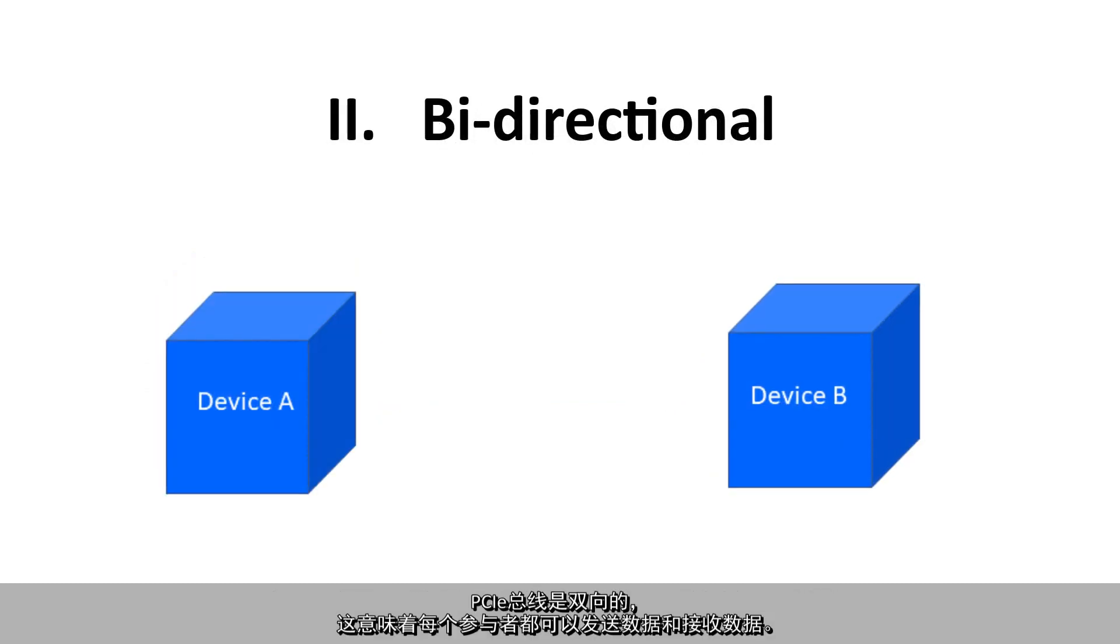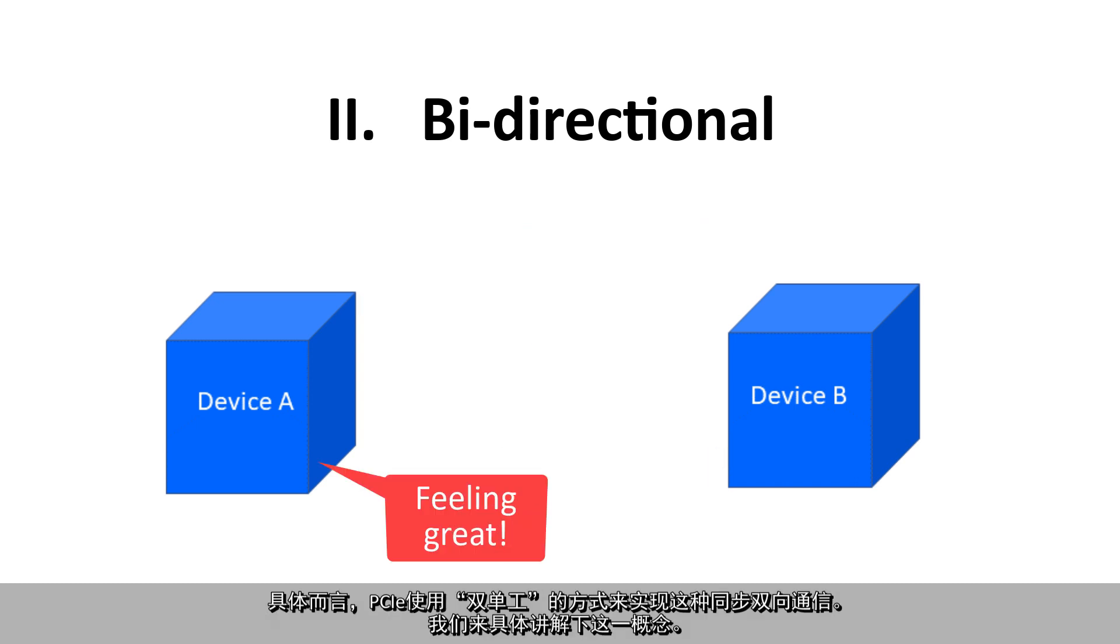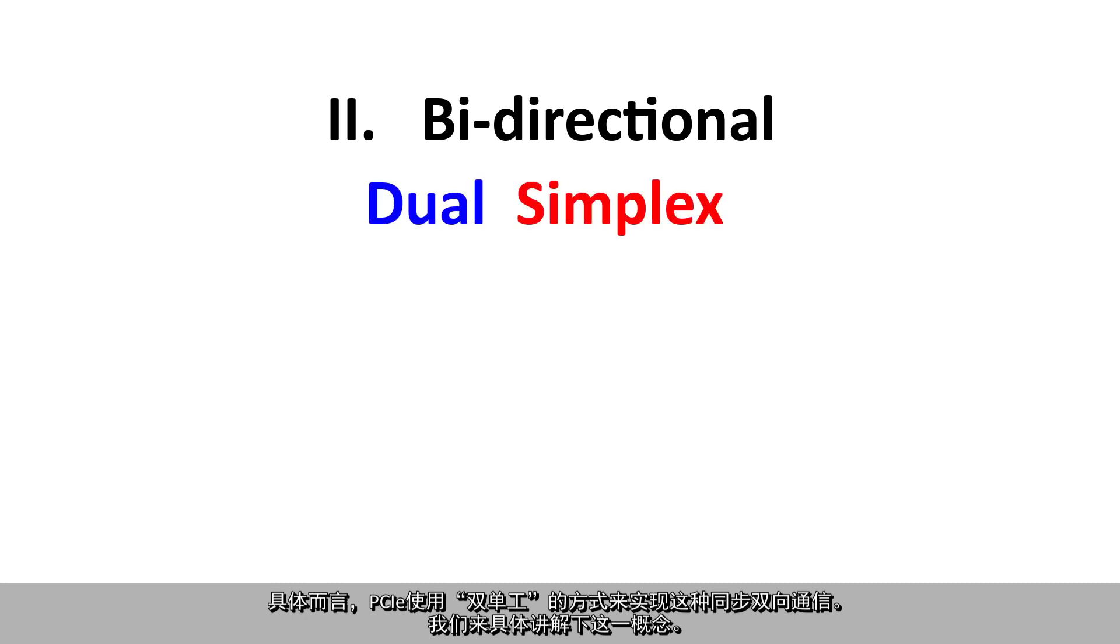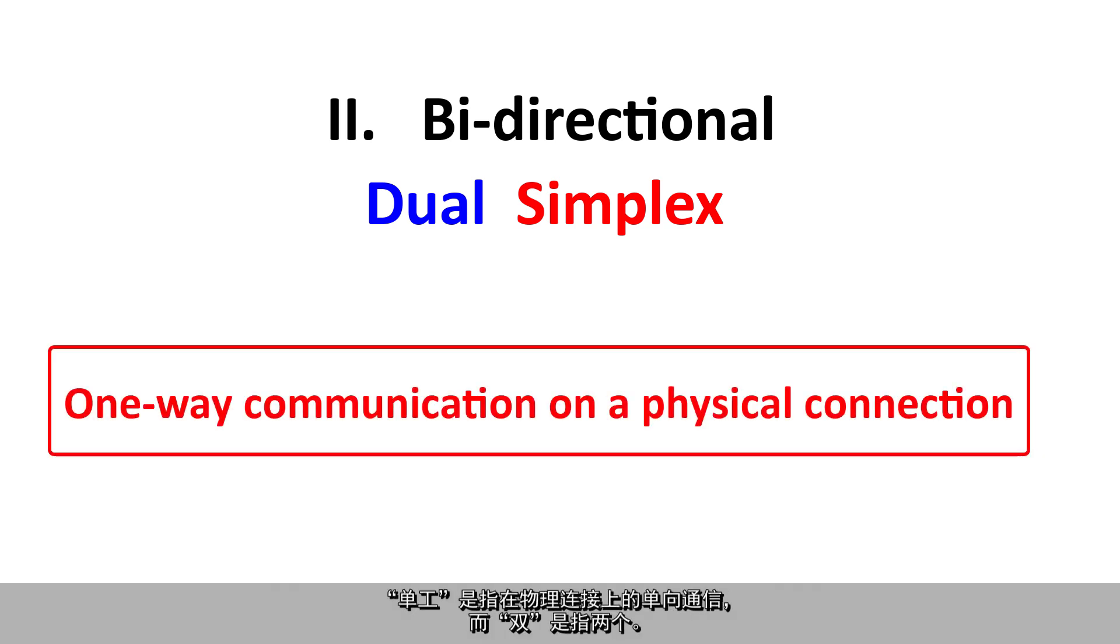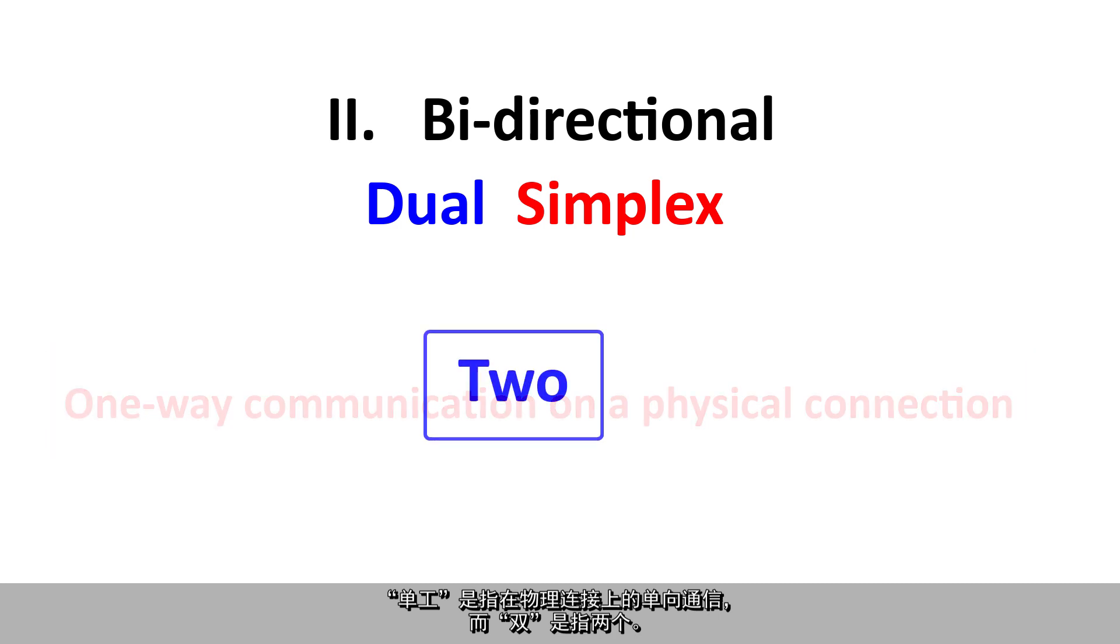A PCIe bus is bi-directional, which means that each participant can both transmit data and receive data. Specifically, PCIe uses what we call dual simplex as the implementation for this simultaneous two-way communication. Let's break this down here. Simplex means that there is one-way communication on a physical connection, and dual means two.